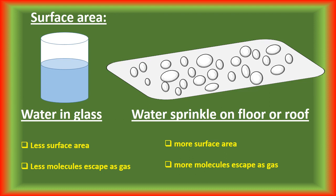Evaporation is a surface phenomenon, so it depends upon the surface area. More the surface area, more will be the evaporation. For example, water present in a glass takes more time to evaporate than if we spread water on the floor. This is because the greater the surface area, the greater the number of liquid molecules that have the chance to escape into the vapor state, and hence higher is the rate of evaporation. Remember that the rate of evaporation is independent of the amount of liquid.